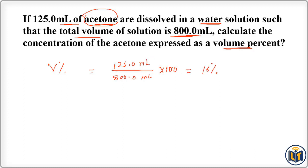Now if we need to calculate the volume percentage of the solvent, water, there is a shortcut. Since the total percentage of volume is taken as 100, we can simply subtract 16 percent from 100: 100 minus 16 equals 84 percent.